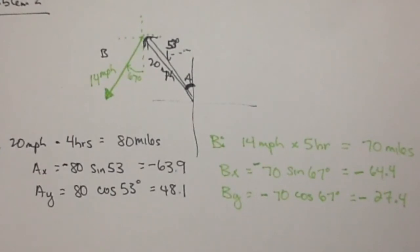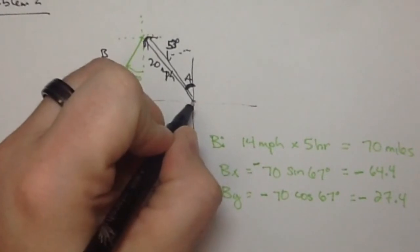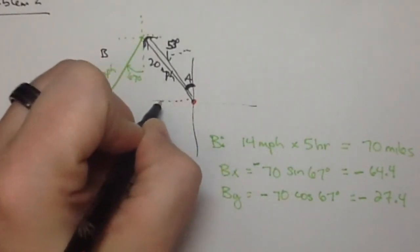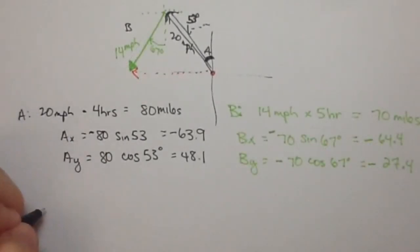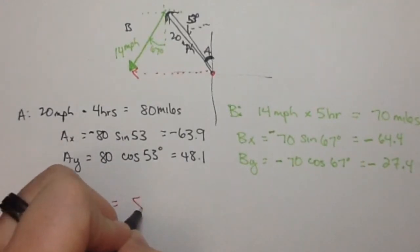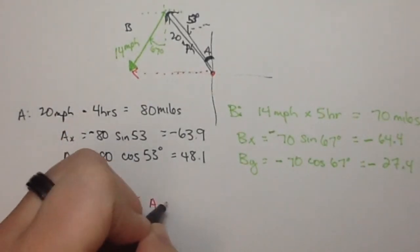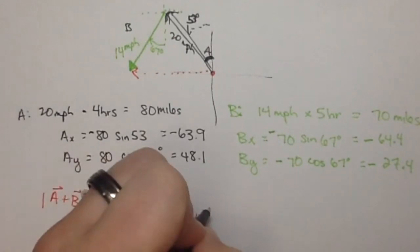So the question was, how far are they from the origin? So from here to there. The question is, find the magnitude of A plus B. So that's just the magnitude of A_x plus B_x, comma, A_y plus B_y.